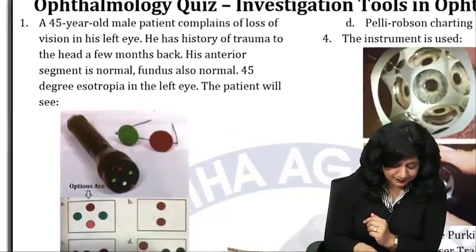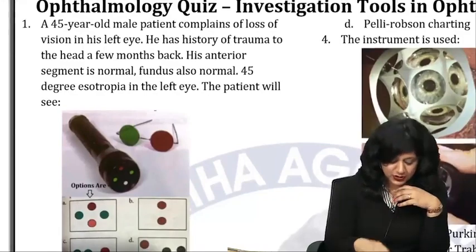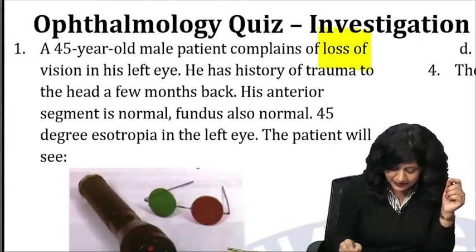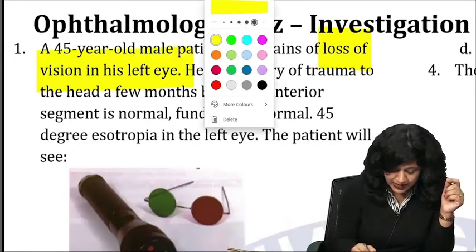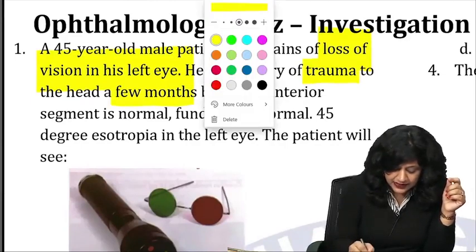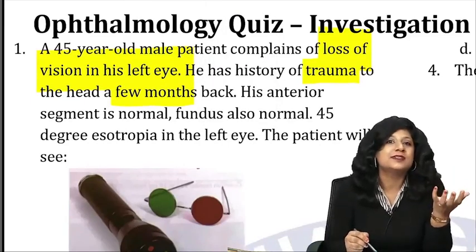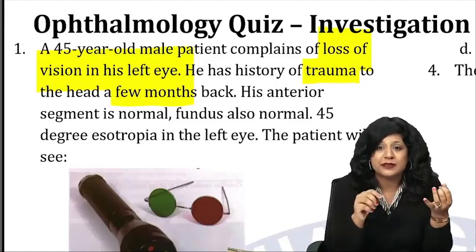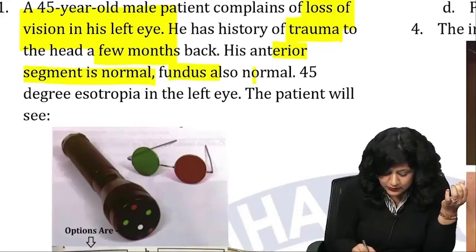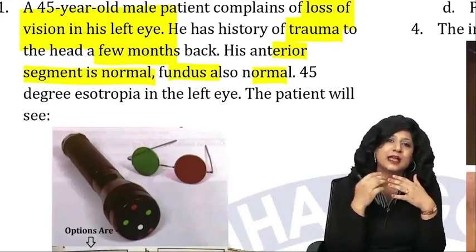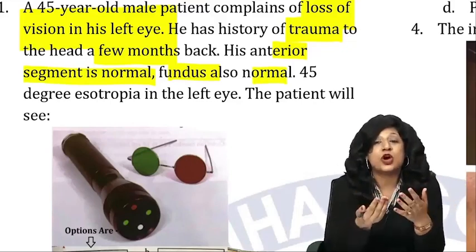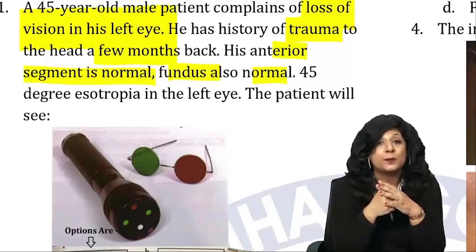Let's start with question number one. A 45-year-old male patient complains of loss of vision in the left eye. He has a history of trauma a few months back. Every word in a question counts. His anterior segment is normal and fundus is also normal. So can you think of something here — trauma occurred, but now anterior segment is normal, fundus is normal? They could be thinking of amblyopia. You are not getting any finding, and there is 45° esotropia in the left eye.